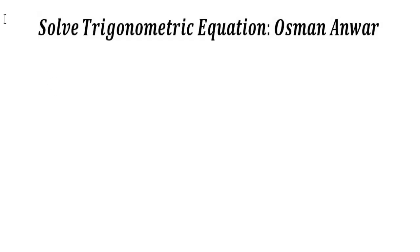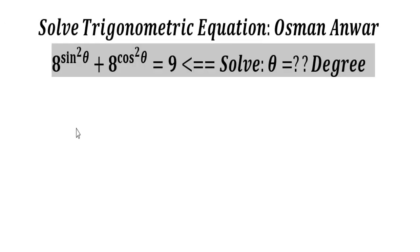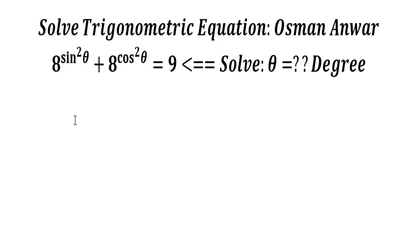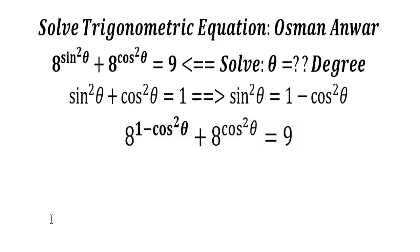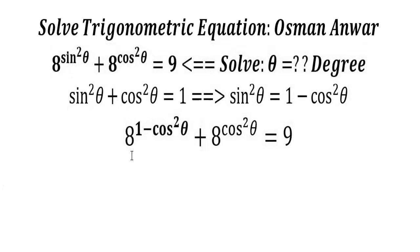We're going to solve this trigonometric equation: 8 to the power of sine squared theta plus 8 to the power of cosine squared theta equals 9, solving for theta in degrees. We know that sine squared theta plus cosine squared theta equals 1, so sine squared theta equals 1 minus cosine squared theta. That means 8 to the power of sine squared theta can be rewritten as 8 to the power of 1 minus cosine squared theta, giving us 8^(1 - cos²θ) + 8^(cos²θ) = 9.